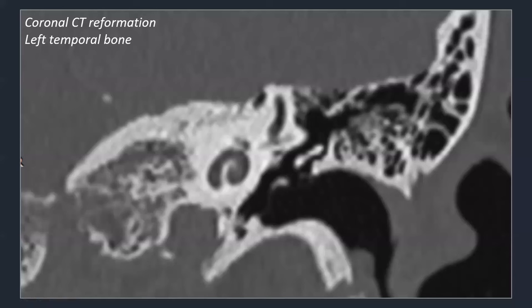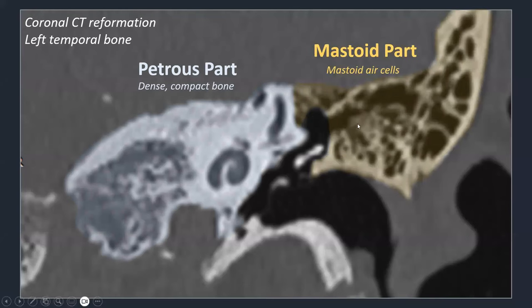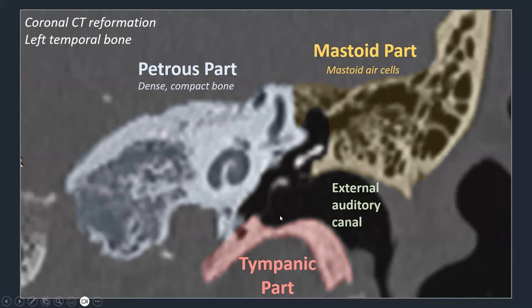On coronal reconstructions of the left temporal bone, we see the cochlea, part of the semicircular canals, the very dense compact petrous bone, and the mastoid part with many air cells. We can identify two cavities: the external auditory canal with the soft tissues of the auricle, and the tympanic cavity, which contains the ossicles — the very small bones responsible for transmitting sound from the eardrum to the neurovascular structures of the cochlea.